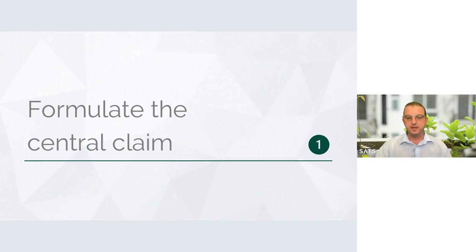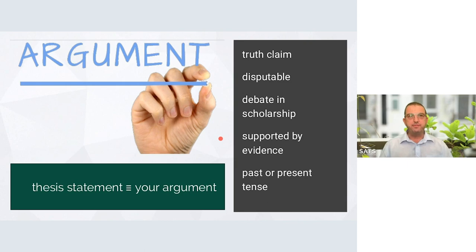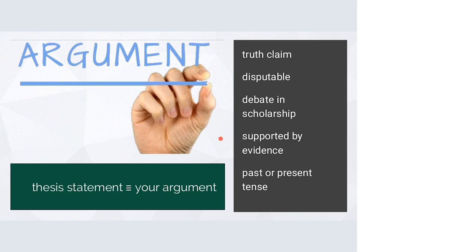Step one: formulate the central claim. This is absolutely the most important step. To do it well, you have to have developed a good, broad understanding of the subject and come to a conclusion on a disputable issue. The argument of an argumentative essay — your thesis statement, your central claim — is your argument. And a good argument has five characteristics.